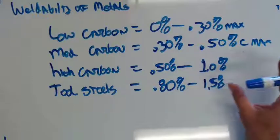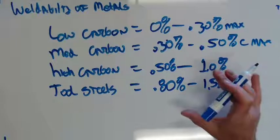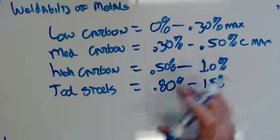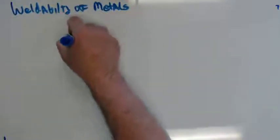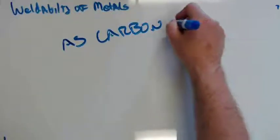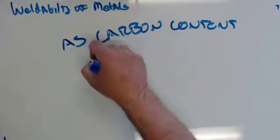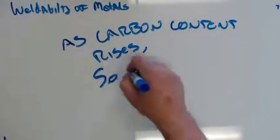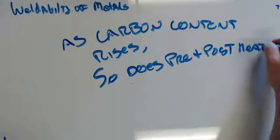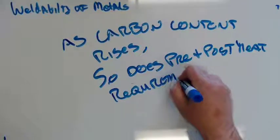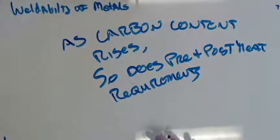So what we have to remember, so important, I'm going to write it down. As carbon content goes up, preheat goes up. As carbon content rises, so does pre and post heat requirements. As carbon goes up, my need for pre and post heat goes up accordingly. Let's talk about some specific steels. And why do we pre and post heat? That's right, to control the cooling rate.